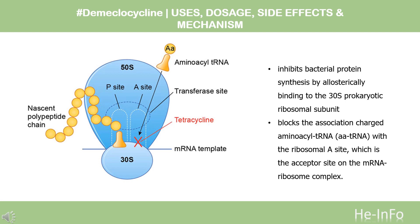The binding is reversible in nature. The use in hyponatremia actually relies on a side effect of tetracycline antibiotics — many may cause diabetes insipidus, dehydration due to the inability to concentrate urine. It is not completely understood why D-meclocycline impairs the action of antidiuretic hormone, but it is thought that it blocks the binding of the hormone to its receptor.